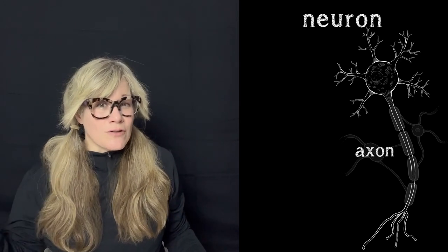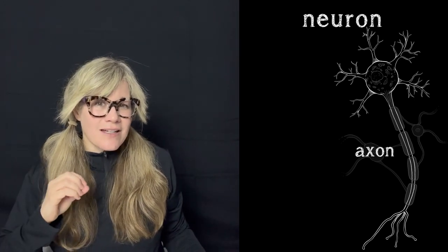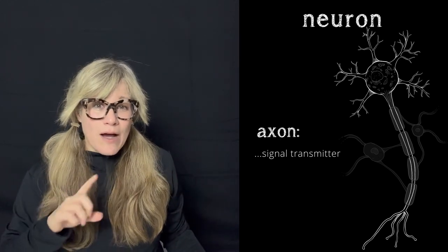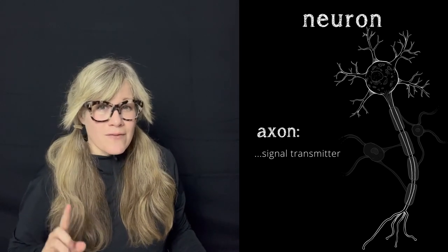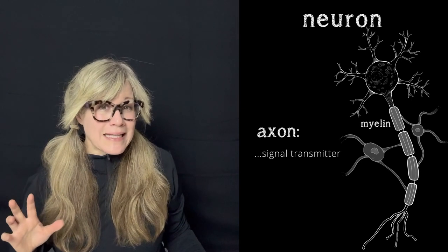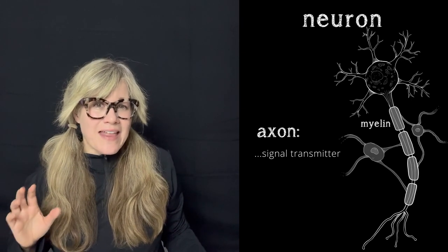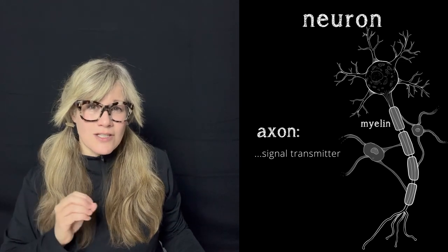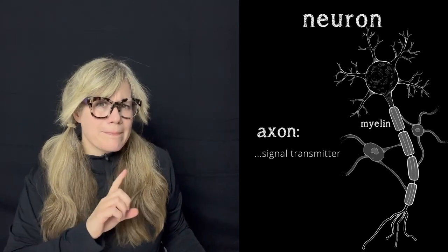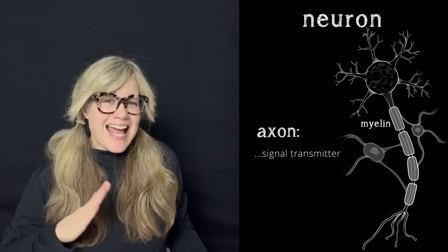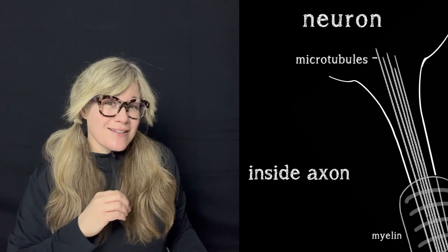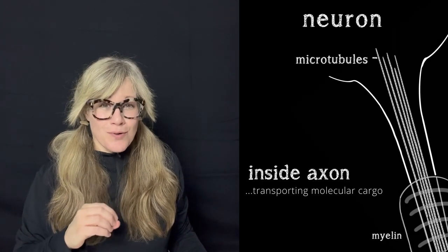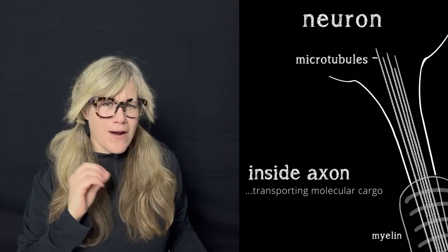So the dendrites are signal receivers and the axon is a signal transmitter. The outer surface of some axons is covered in a fatty substance called myelin, and that has a specific purpose related to insulating the signal that is traveling along the axon.